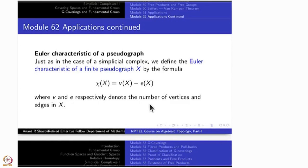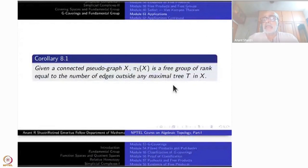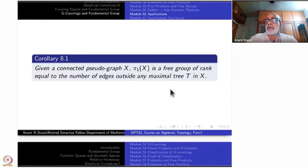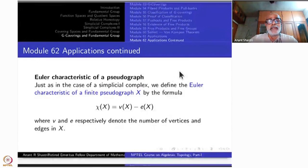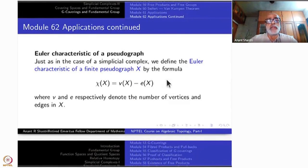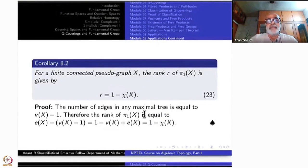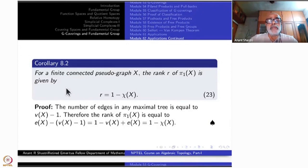Last time we proved an important result about the fundamental group of any pseudograph: for a connected pseudograph, the fundamental group is a free group whose rank equals the number of edges outside any maximal tree T inside X. We are going to apply this now to get a nice formula in terms of the Euler characteristic.